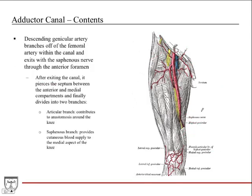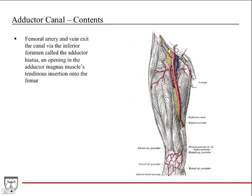Another important content is the descending genicular artery (also labeled the highest genicular). It branches off the femoral artery within the canal and exits with the saphenous nerve. After exiting the canal, it pierces the septum between the anterior and medial compartments and divides into two branches: an articular branch forming an anastomosis around the knee, and a saphenous branch traveling superficially with the saphenous nerve to supply the medial cutaneous region around the knee. The femoral artery and vein exit via the inferior foramen — the adductor hiatus — within the adductor magnus muscle tendon where it inserts onto the femur.